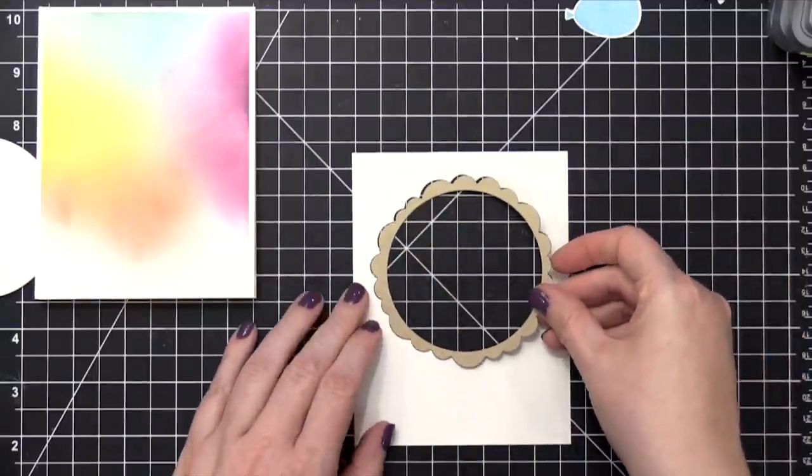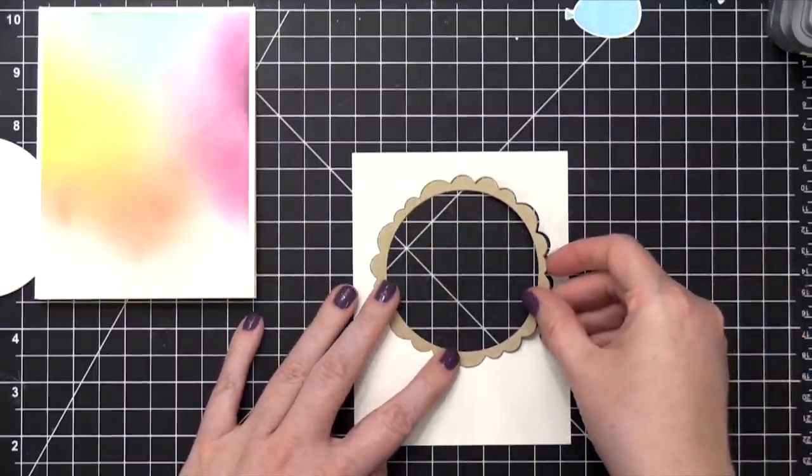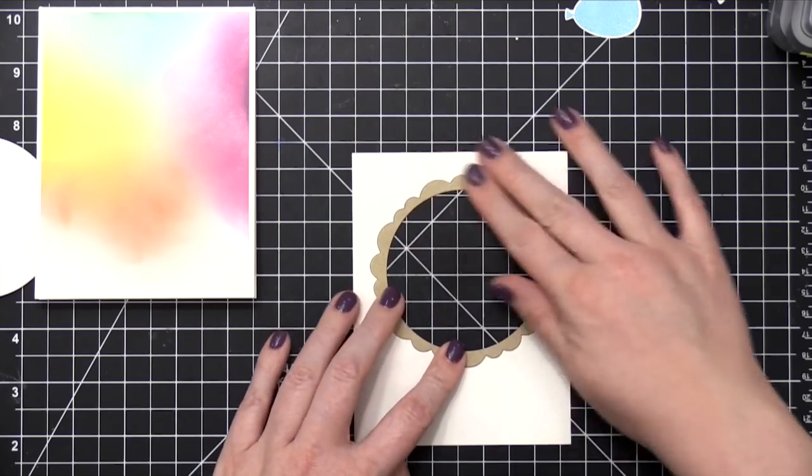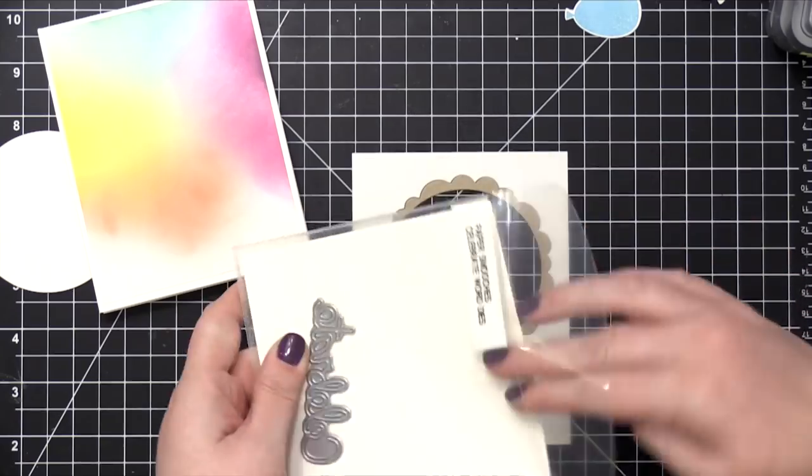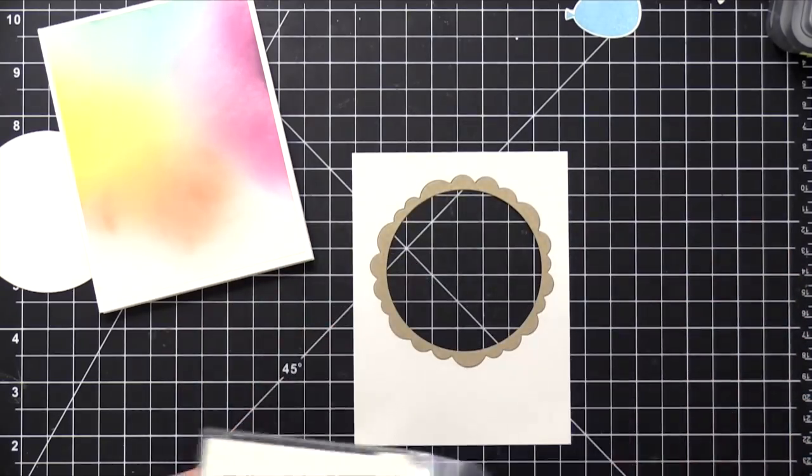So I'm going to puzzle piece this frame into that white cardstock, and then I'm going to turn it over and use some tape to tape that in place.